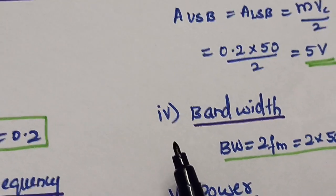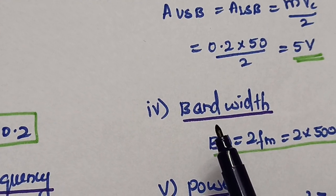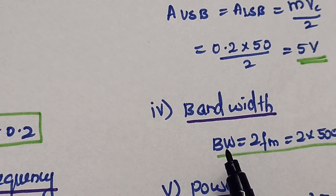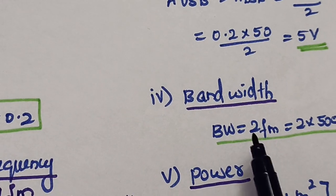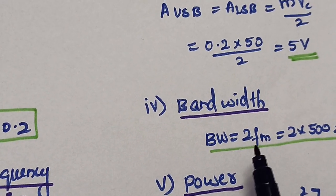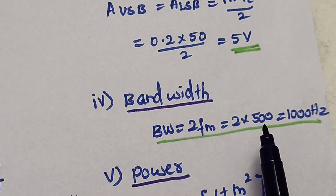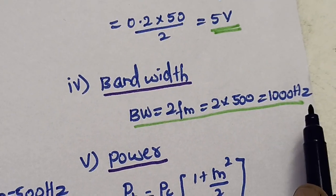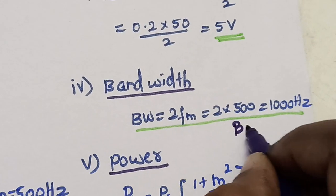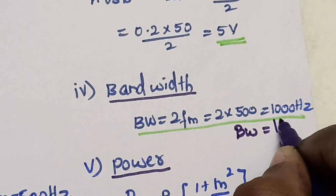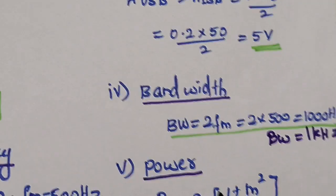The next calculation is bandwidth. Bandwidth of an AM signal is given by the formula 2·fm. With fm = 500 Hz, bandwidth = 2 × 500 Hz = 1000 Hz, or 1 kilohertz.